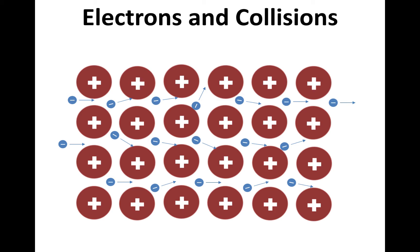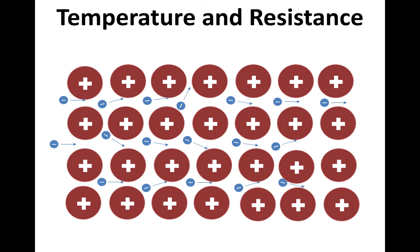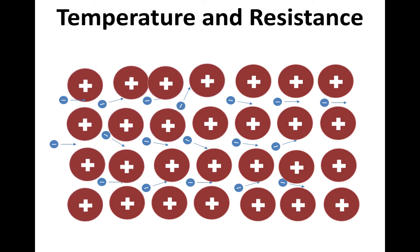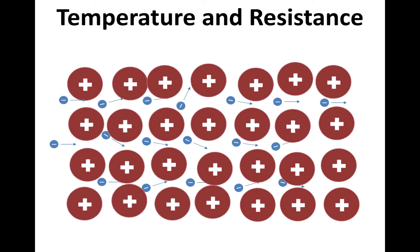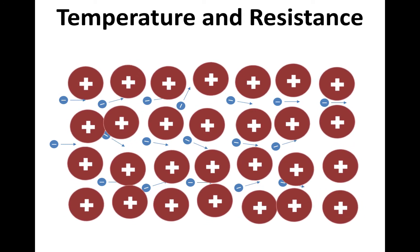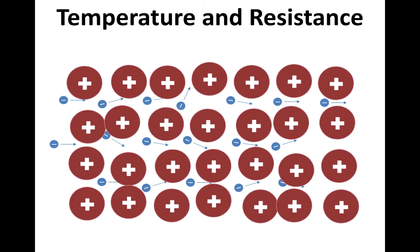If we consider increasing the temperature of this metal, we know that the ions begin to vibrate. The warmer a material is, the faster the ions will vibrate. In this case, the same potential difference will result in the electrons colliding with more ions because the ions are vibrating, because they're moving around. The electrons will collide with those ions more often.